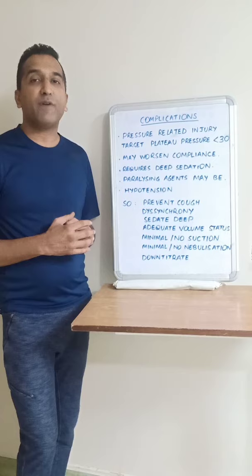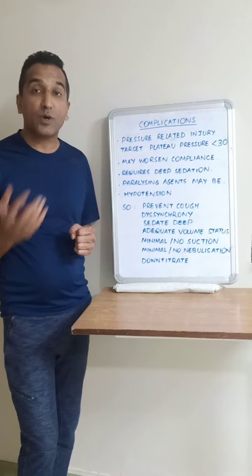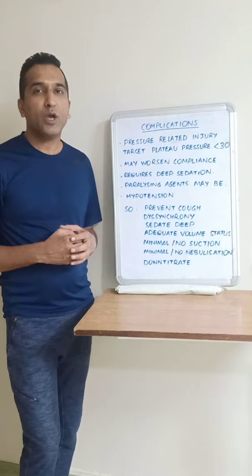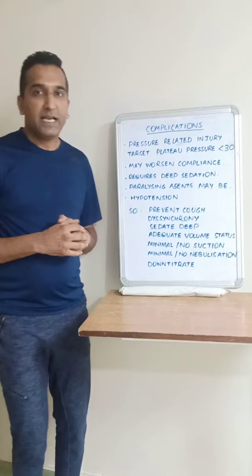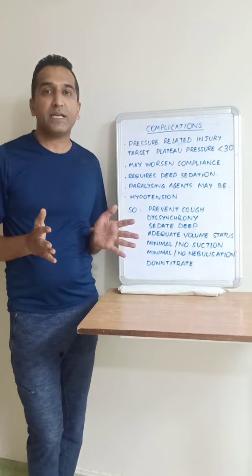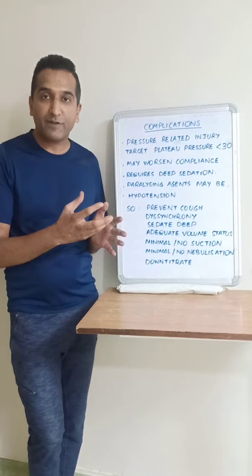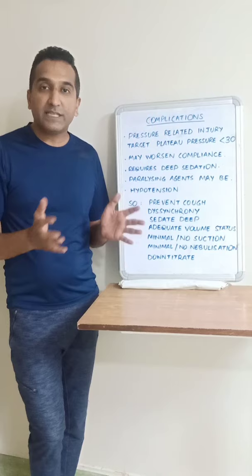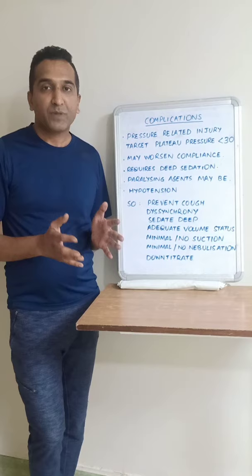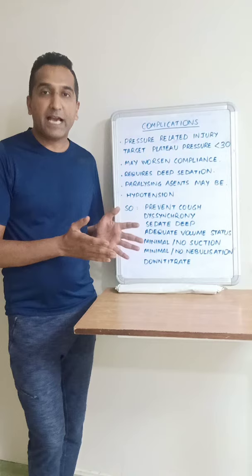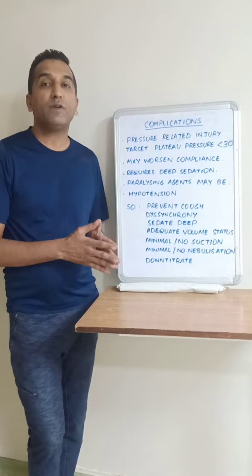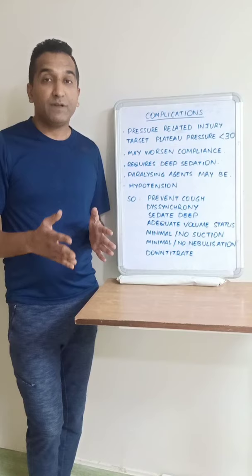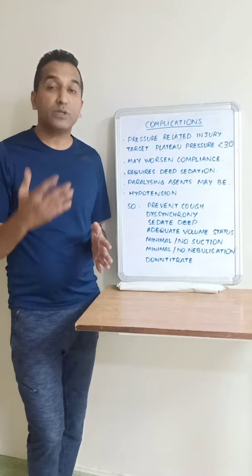Lower tidal volumes may prevent injury compared to higher tidal volumes, so always target 6 ml per kg or even lower. PEEP may worsen compliance because ARDS may have inhomogeneous lung involvement — certain areas may have near-normal alveoli while others are severely affected. PEEP gets distributed to all of them and can over-distend the normal alveoli, putting them at a mechanical disadvantage, while possibly failing to open collapsed alveoli. If PEEP application actually worsens compliance, we are likely over-distending normal lung, which may also impair oxygenation.